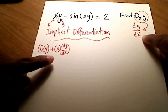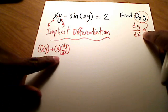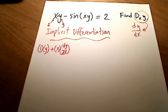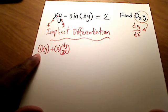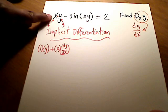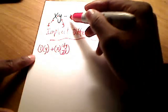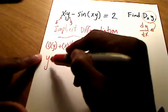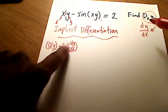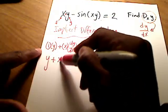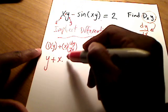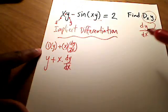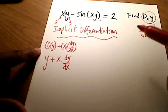Since g is y, I can't take the derivative of y with respect to x because there's no x in it. So I'll write it and leave it in the form dy/dx — and that's actually what we're after. Let me clean this up: 1 times y is simply y, and x times dy/dx is just x times dy/dx.